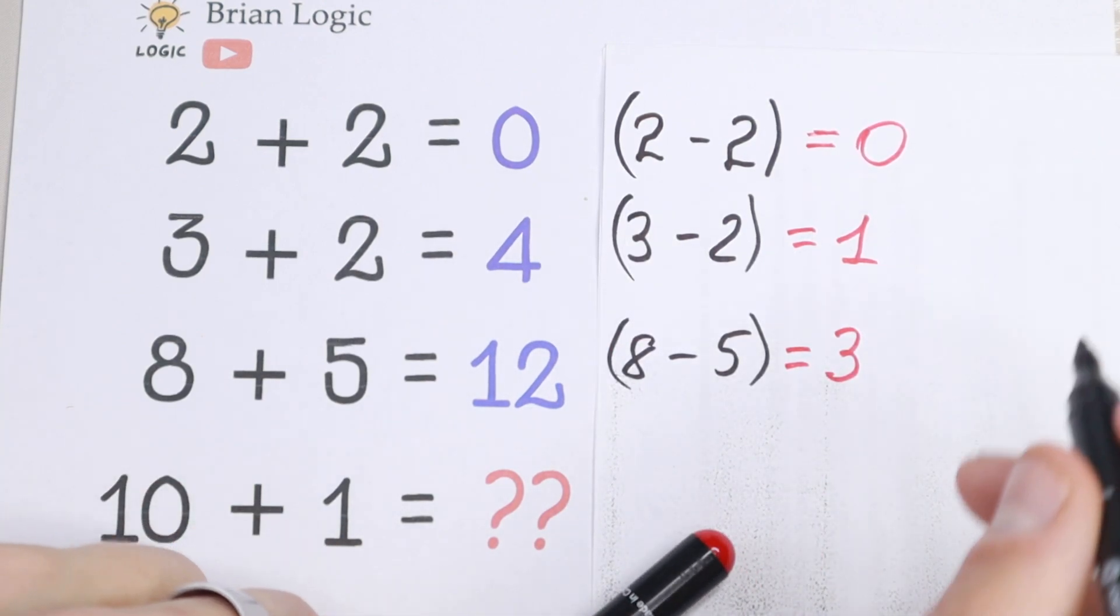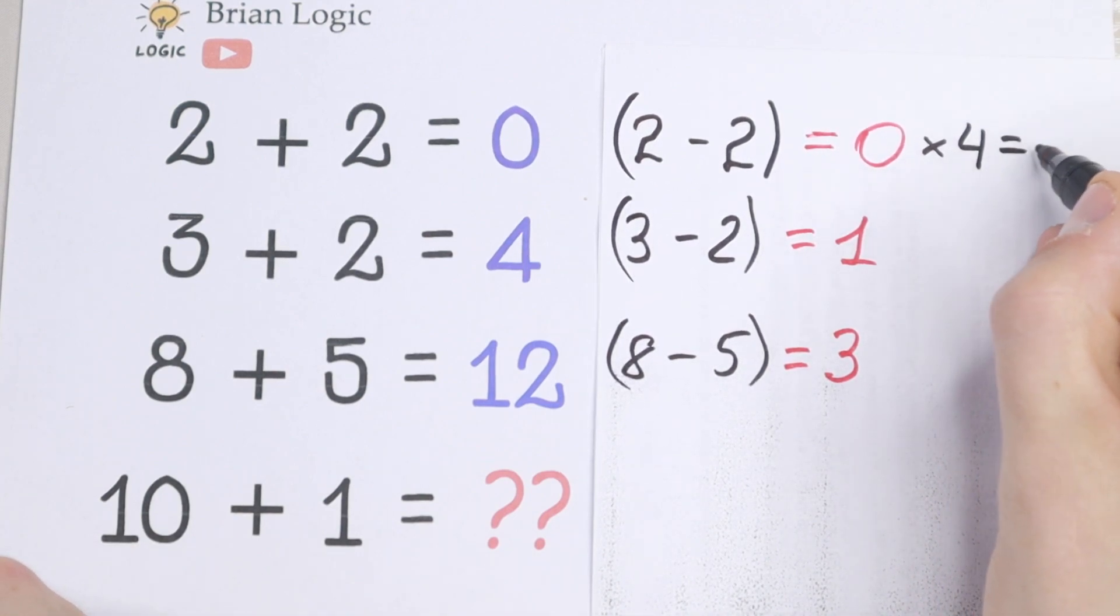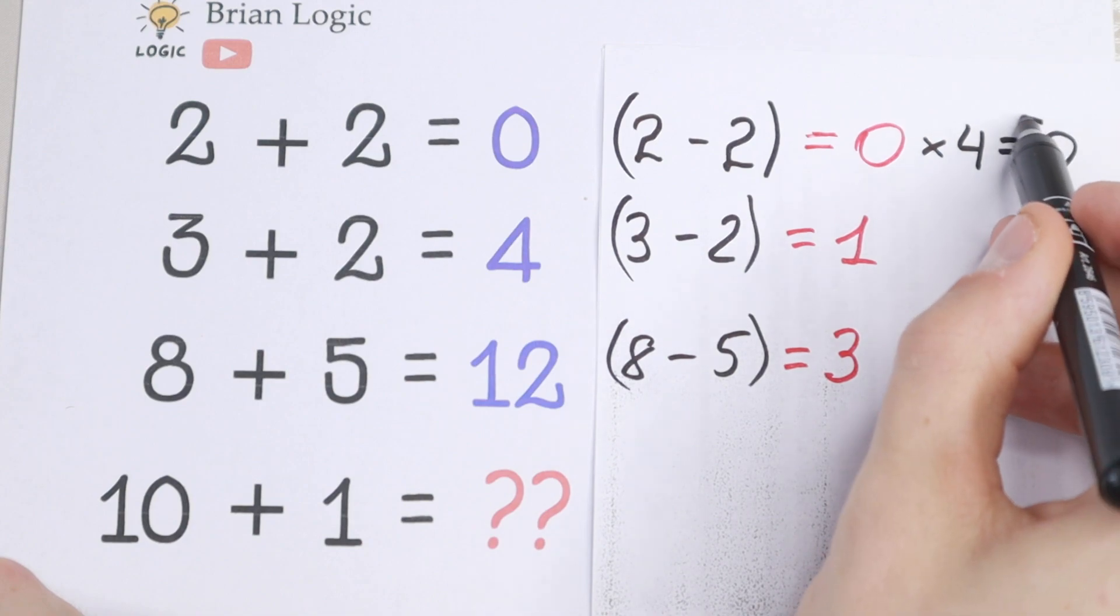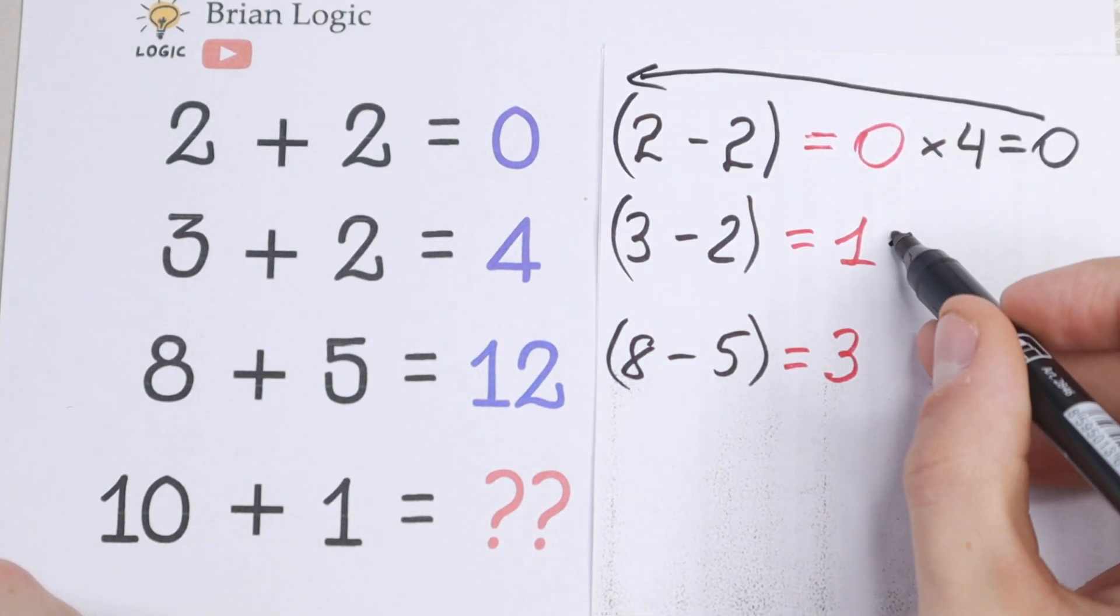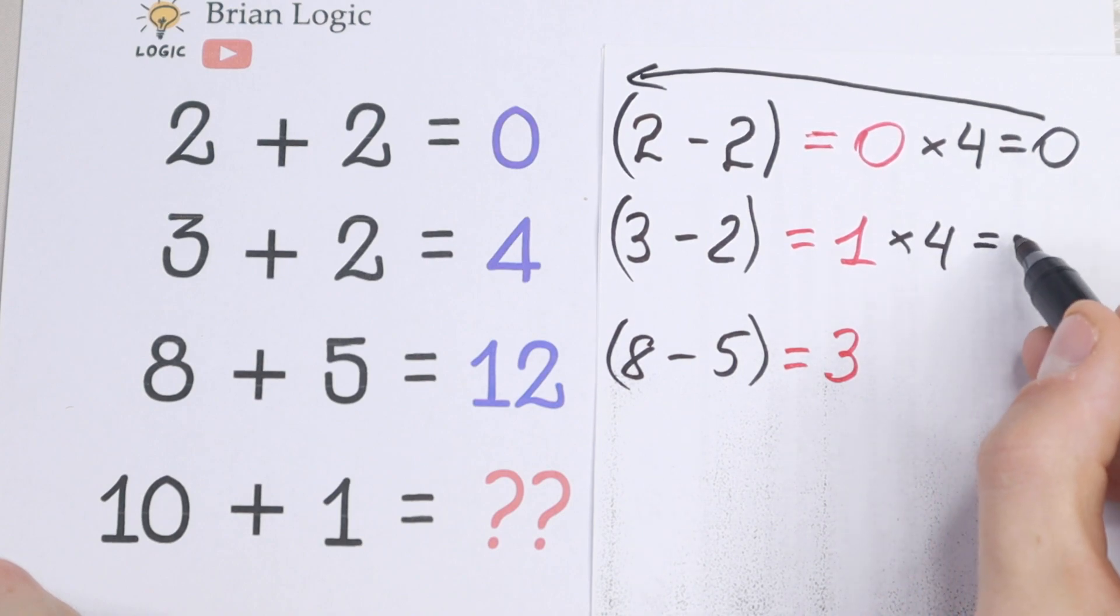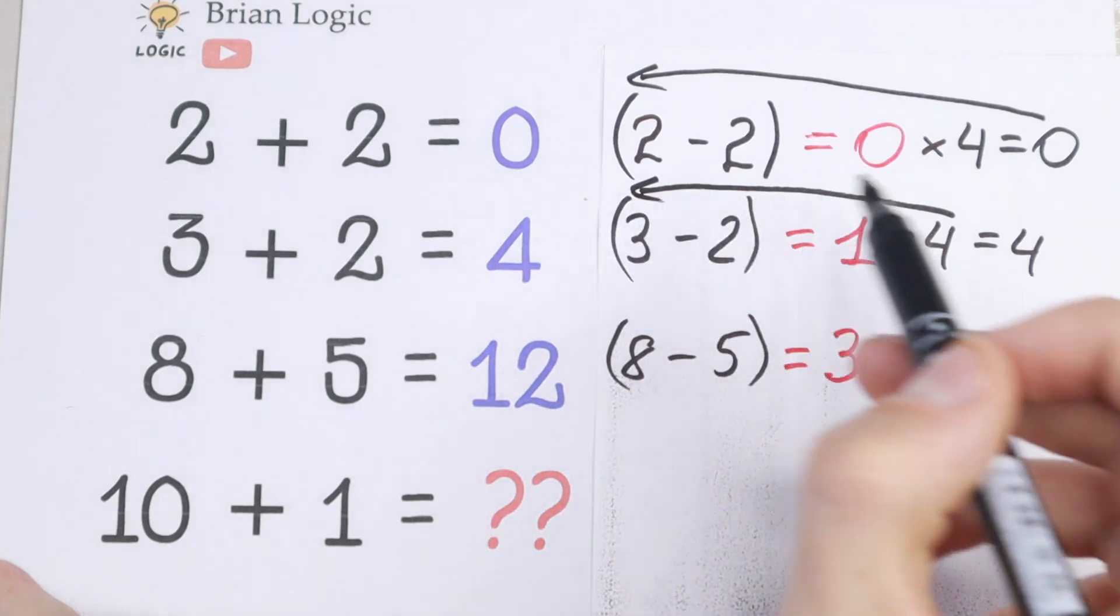Because if we multiply the first 0 by 4, we will have 0, which is the same as our first number. And if we multiply this 1 by 4 as well, we will have 4.